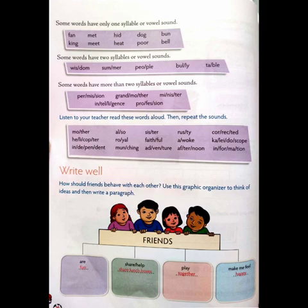Meat — there are two vowels. Heat — again there are two vowels. Poor — two vowels. Bell — one vowel. So what I mean to say is, when you join two syllables together the sound changes. That is important and you must take care of these things when you read these words.